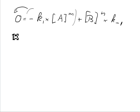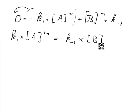and we get K-1 times A to the power of M equals K-1 times B to the power of N.